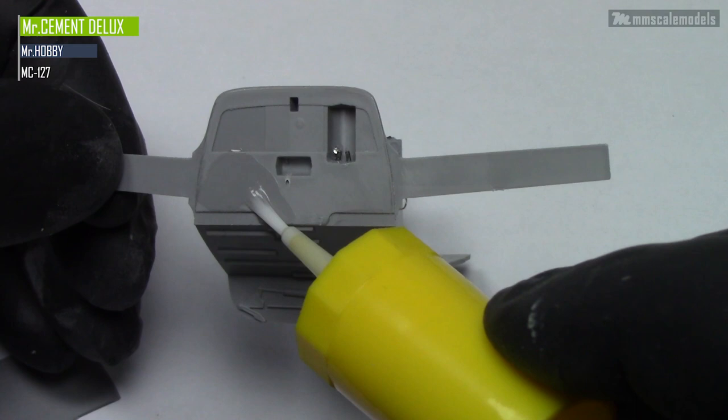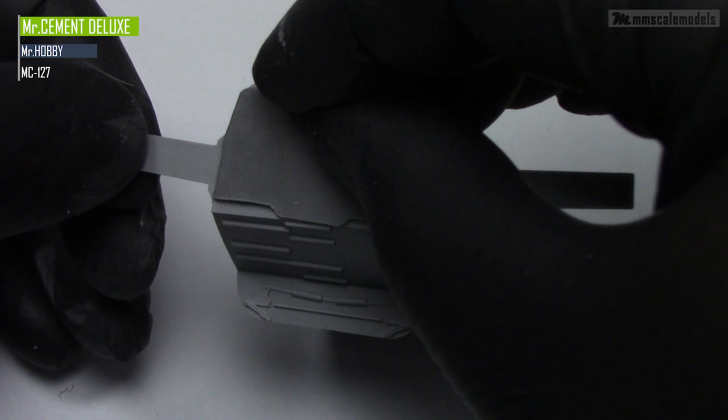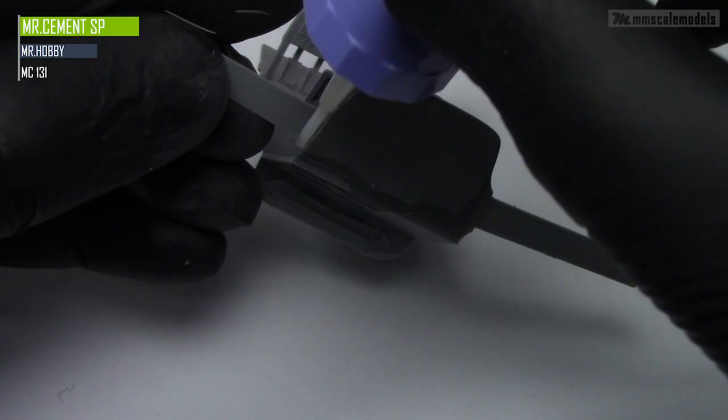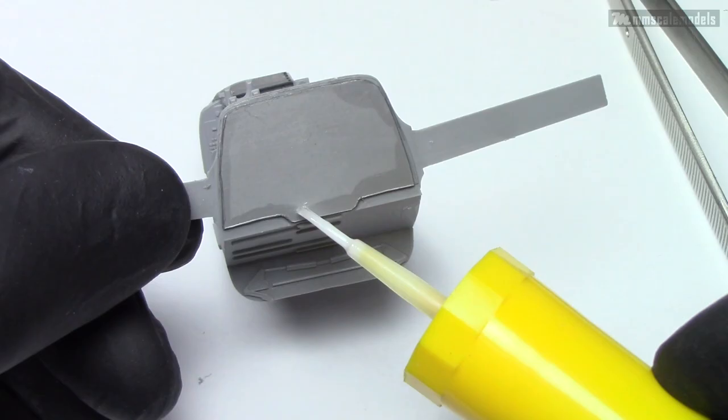And then when everything was aligned I applied some Mr. Cement SP to fix the thing in place a bit faster. Next came a couple of small details from a round rod.